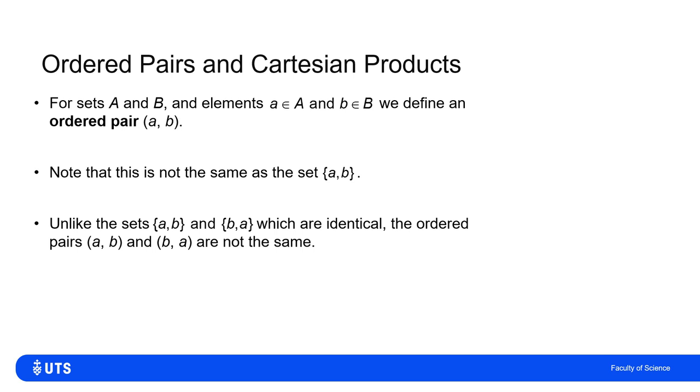So where we've got sets containing {a, b} and sets containing {b, a} being regarded identical, the ordered pairs with the elements in a different order are not the same. We can now define the Cartesian product of the sets which the elements came from.